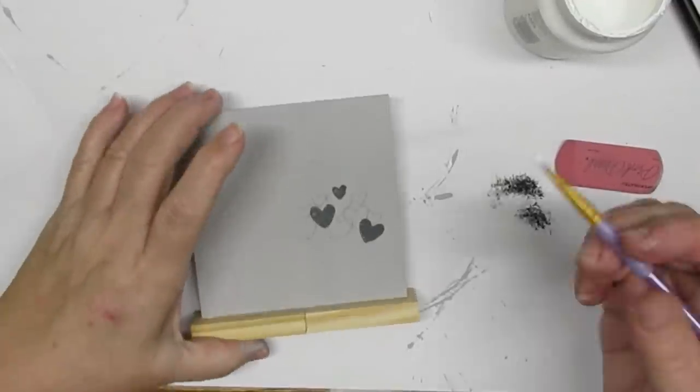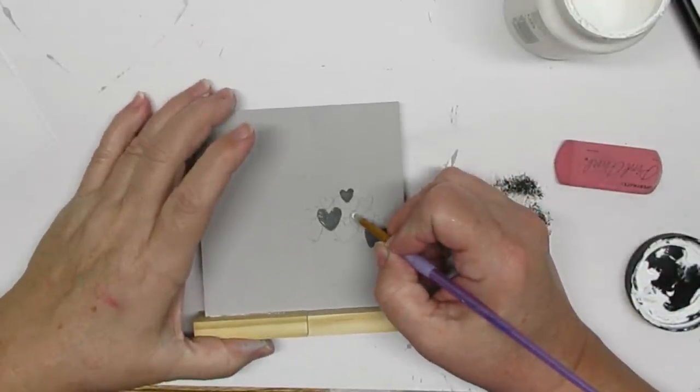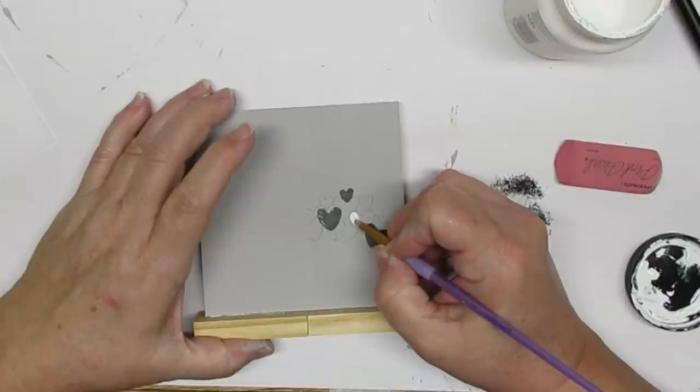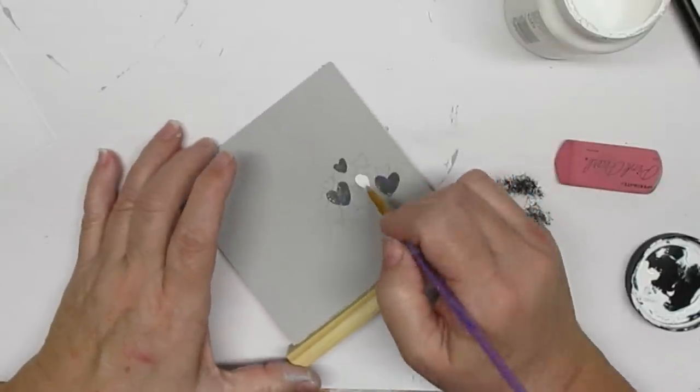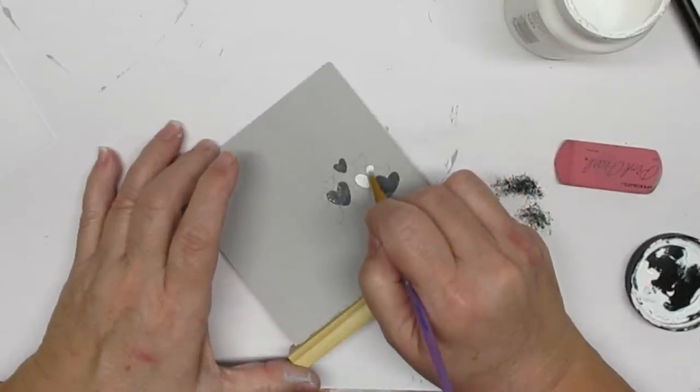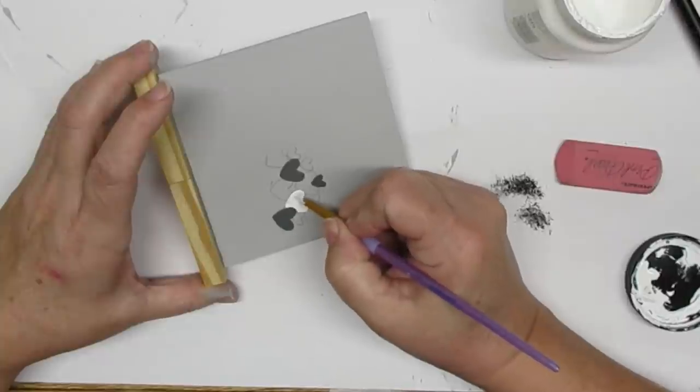I'm going to paint the hearts different colors and I'm just going to keep it rather neutral using some different shades of gray, a little bit of cream, and white. Some of the hearts are overlapping on top of the others, so I'm just going to make sure that I follow all of my pencil lines.